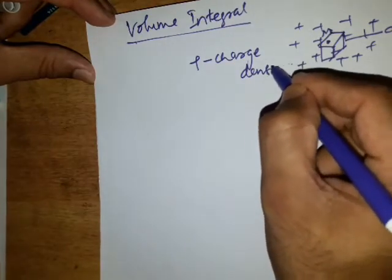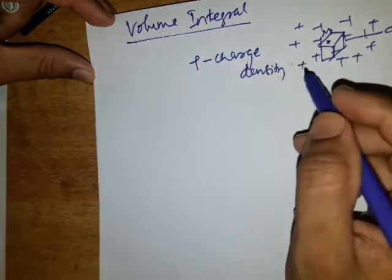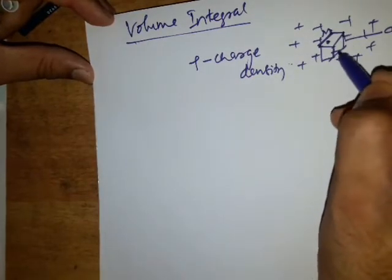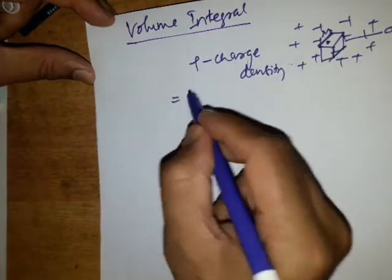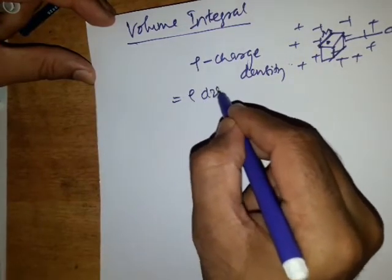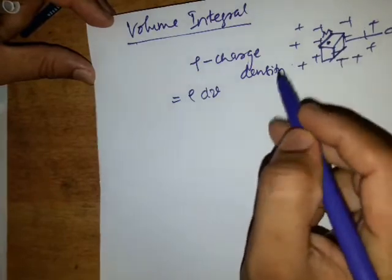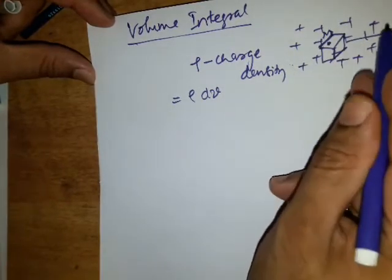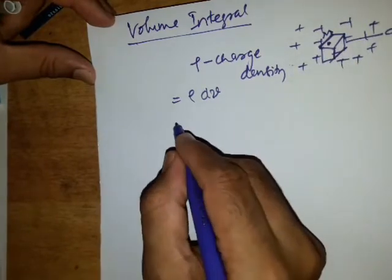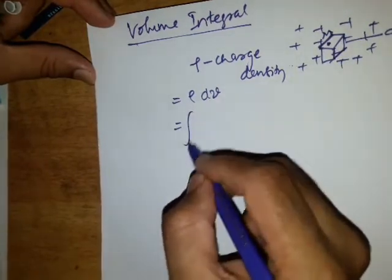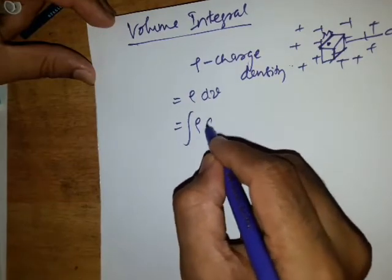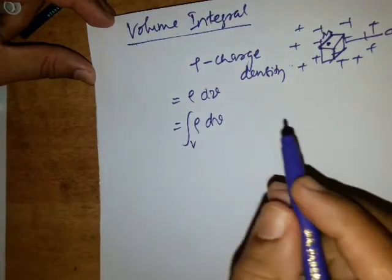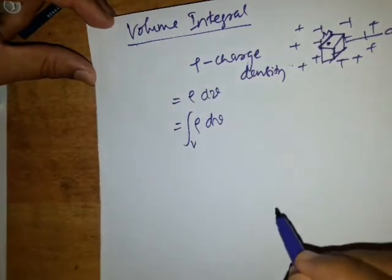Charge density of the charges, means charge per unit volume. And what is the charge present within the small elemental volume DV is given by rho DV. Now what is the total charge present in a volume, in a given volume? Then we need to integrate this over the volume. So it is a volume integral DV. It gives the total charge present over the volume V. So this is about the volume integral.